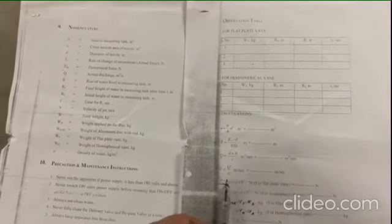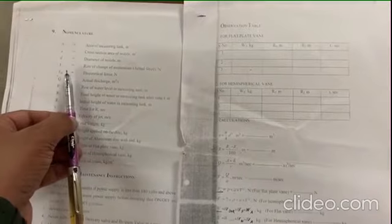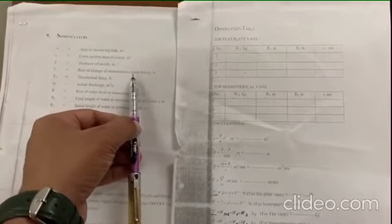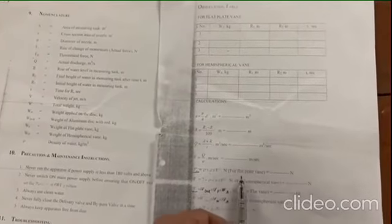We can find out the velocity of jet by using this formula—it will come in meters per second. Then we can find out the rate of change of momentum or actual force by using this formula. It will come in Newtons. This formula can be used for flat vane as well as for hemispherical vane.